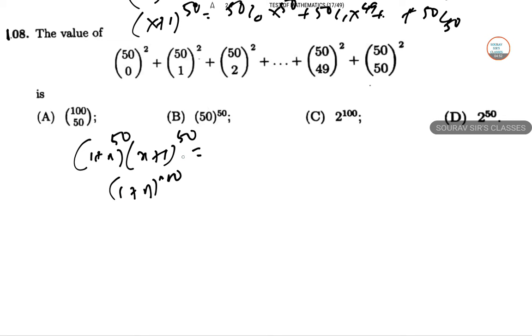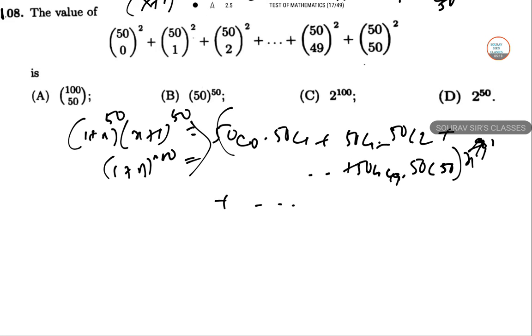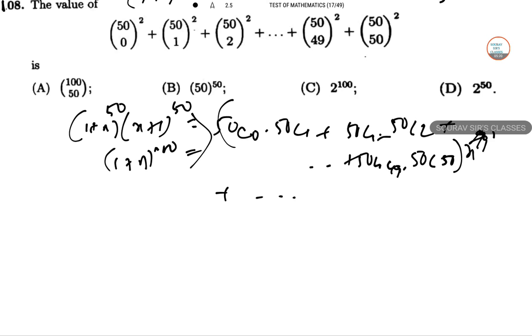From the product of these two expressions, we get 50C0 squared plus 50C1 squared times x and so on. The coefficient of x to the power 49 in this expression will be 100C49, which equals 100C51.